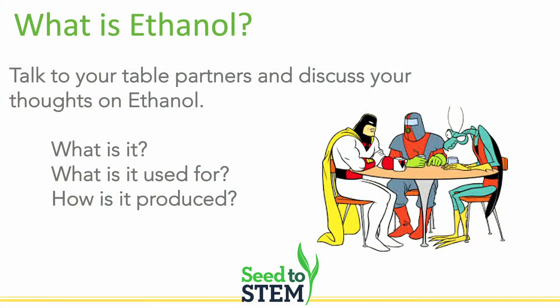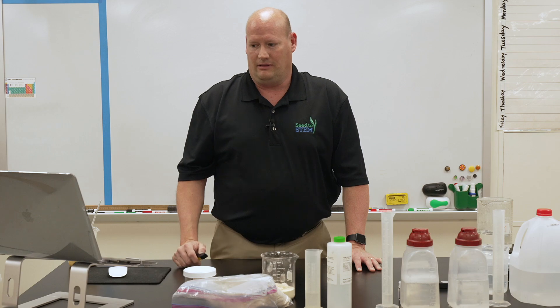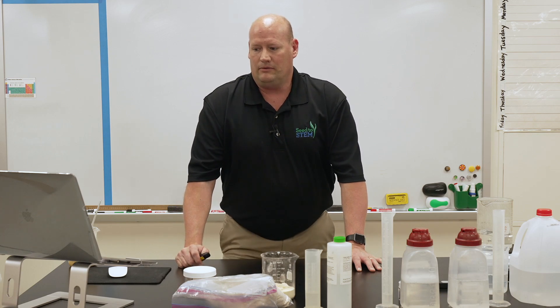We ask our students to do a little round table: what is ethanol? Give them a few minutes to discuss what it is, what it is used for, how it is produced, and then give them an opportunity to share out their answers with the rest of the class. Then we go in and again talk about the importance of it and what it is.